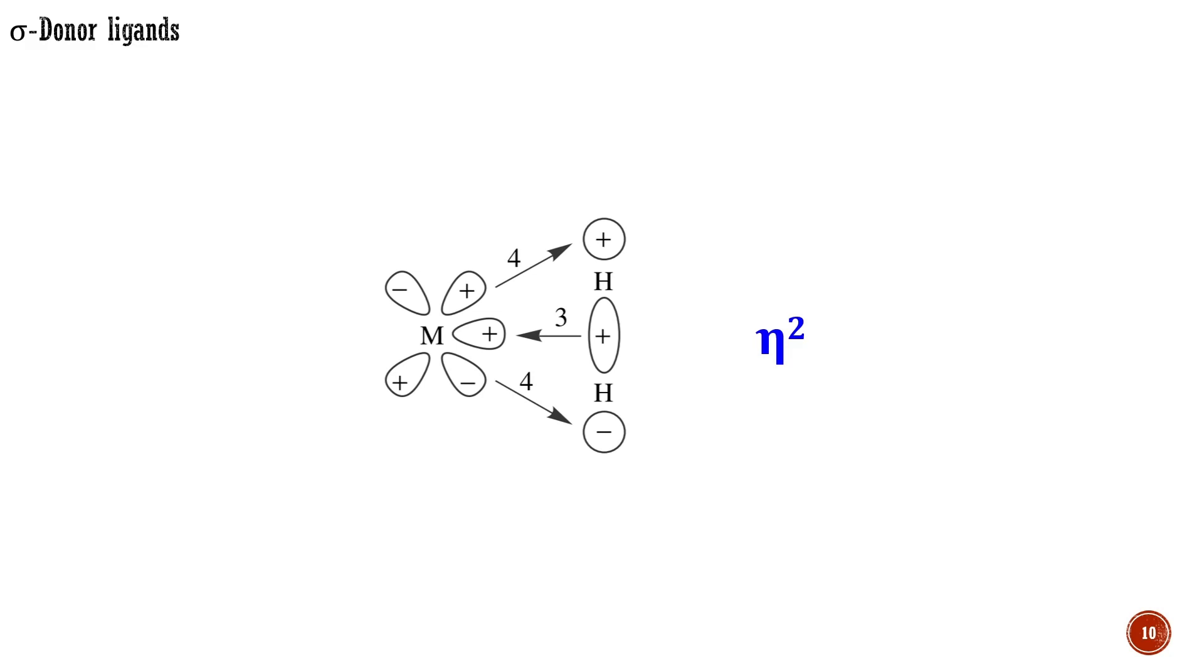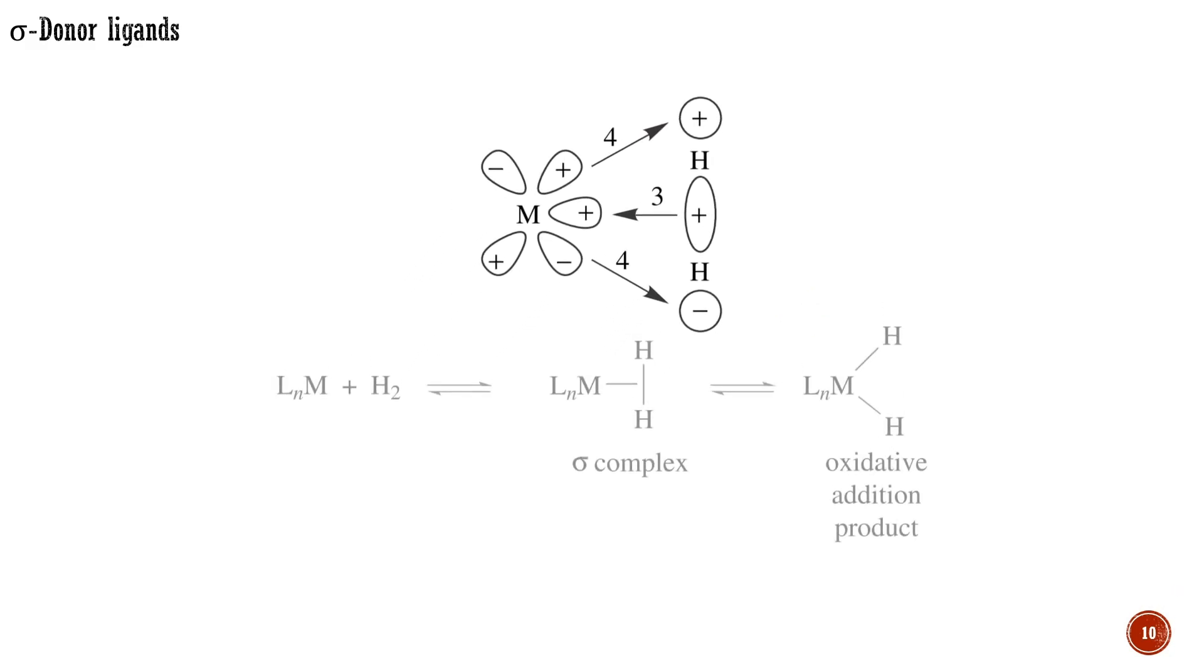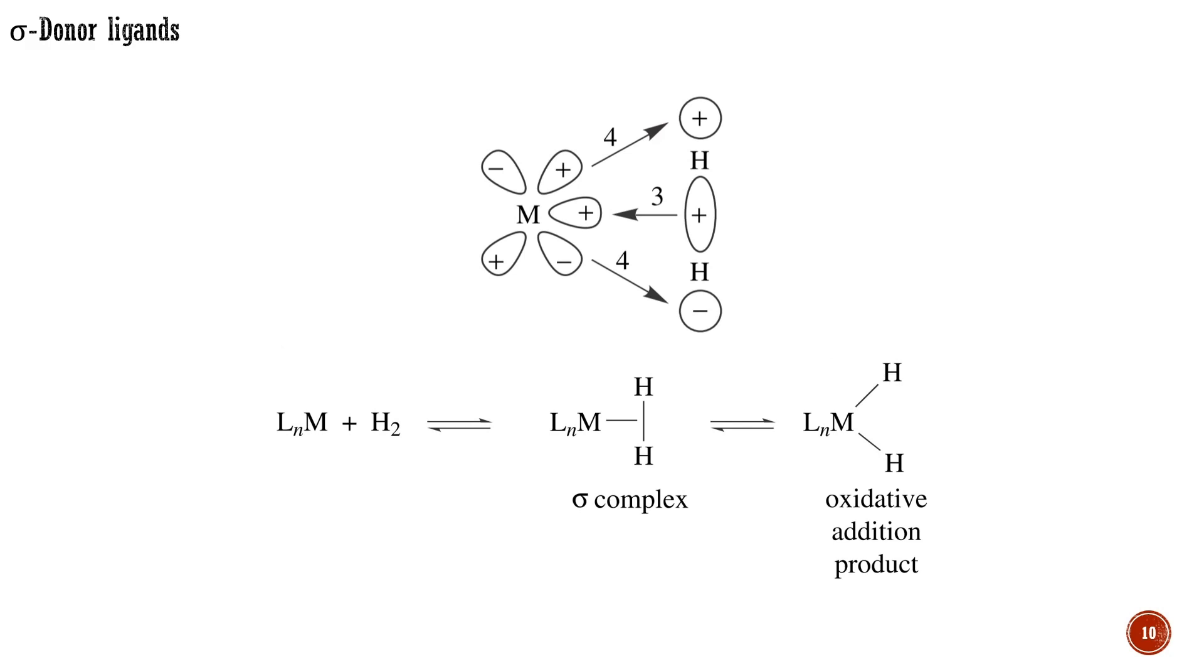For σ-donors such as hydrogen gas, forming the metal-ligand-σ bond partially depletes the hydrogen-hydrogen-σ bond as electrons that were fully engaged in keeping the two hydrogen atoms together in free hydrogen gas are now also delocalized over the metal. Backbonding into the hydrogen-hydrogen-σ antibonding orbital causes additional weakening or even breaking of the hydrogen-hydrogen-σ bond. In case of strong backbonding, the hydrogen-hydrogen bond breaks and a dihydride is formed.